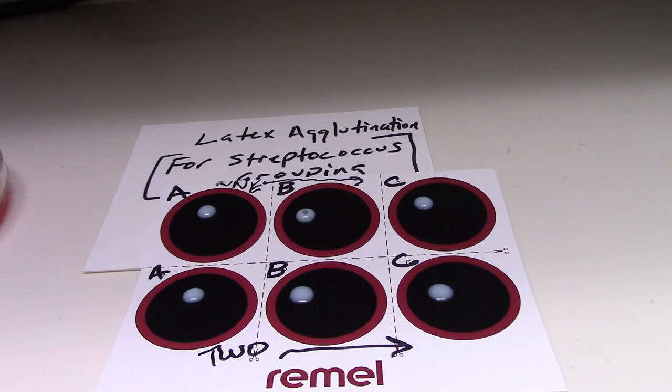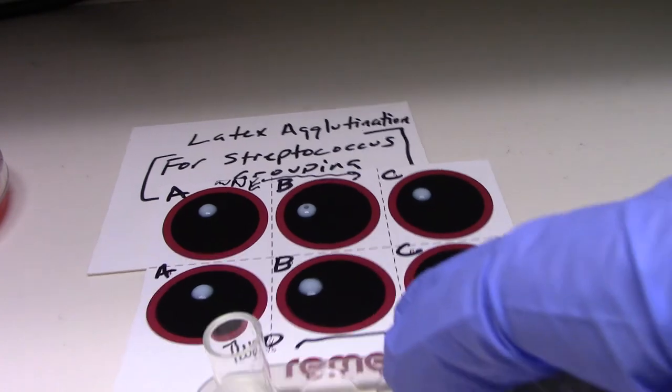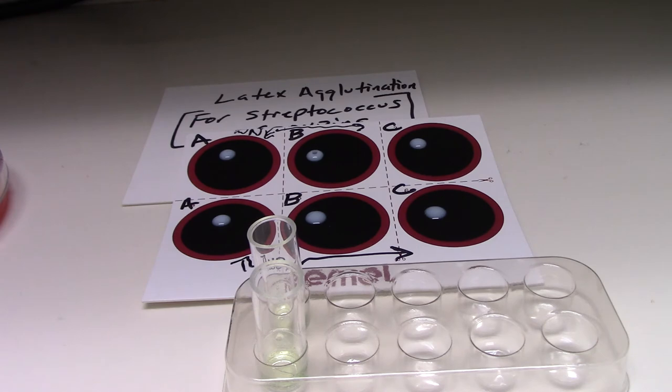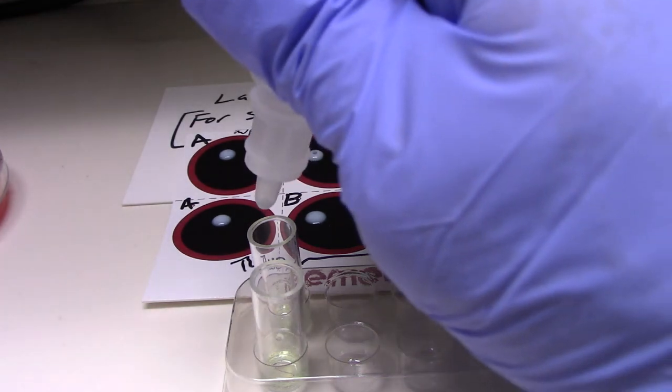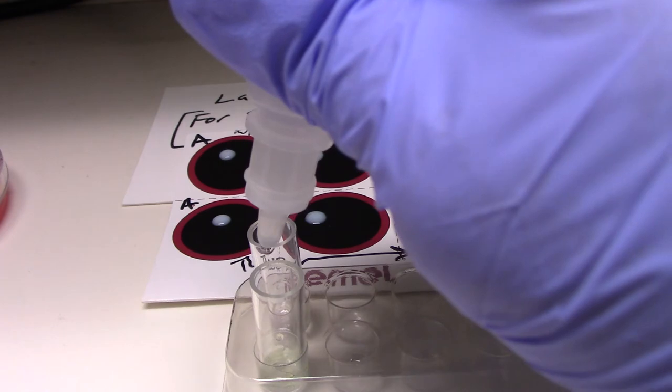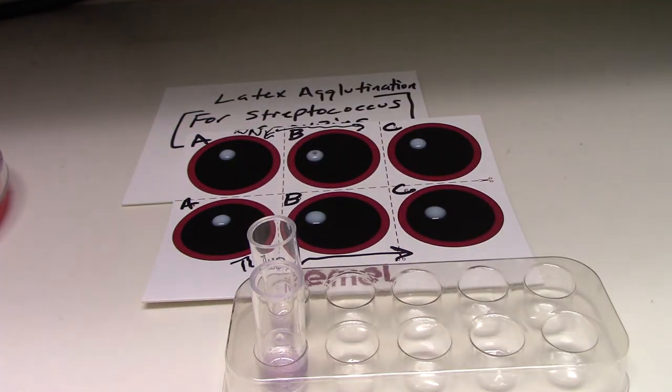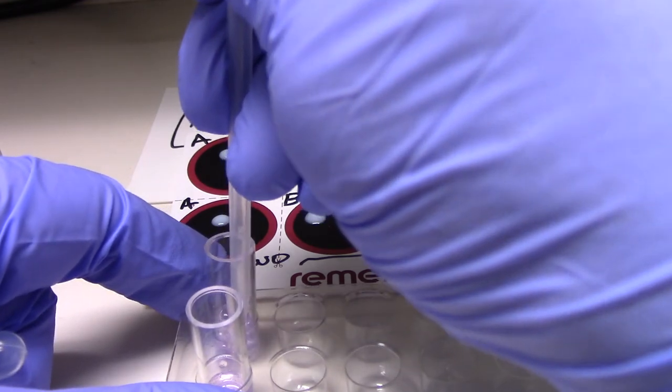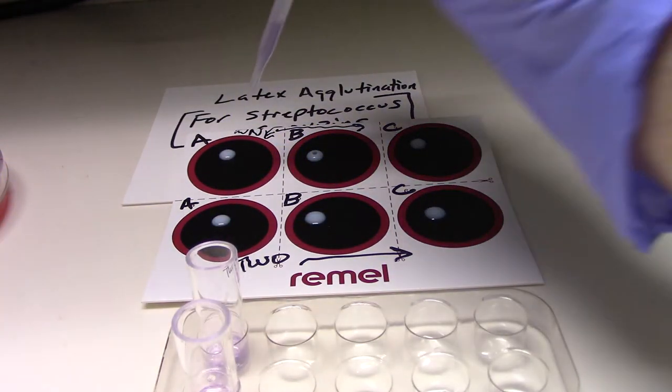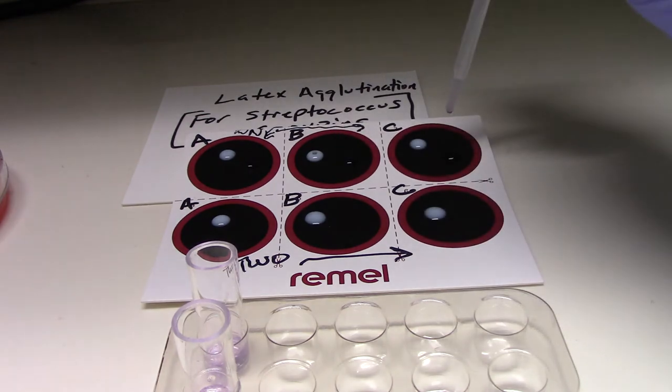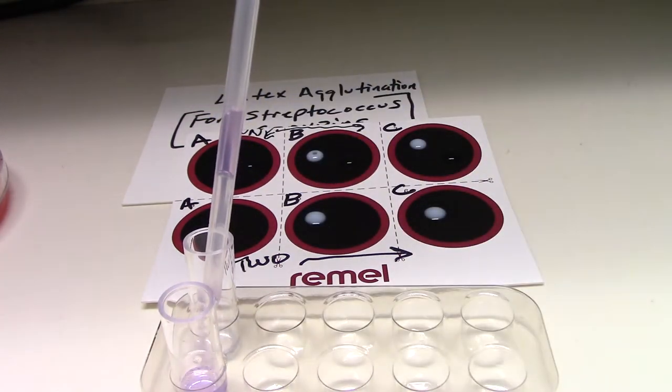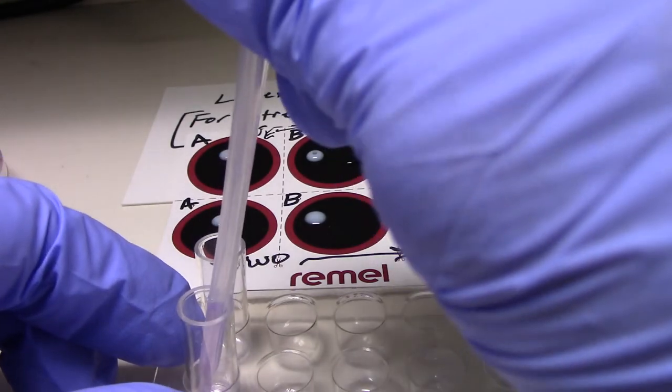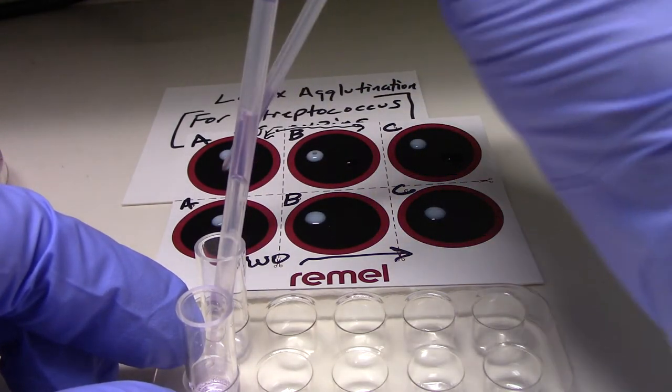So now what we're going to do is neutralize our acid with a base. After we neutralize that acid with the base, we're going to mix our specimens. We're going to add them to the reaction sites. Number 1, number 2.